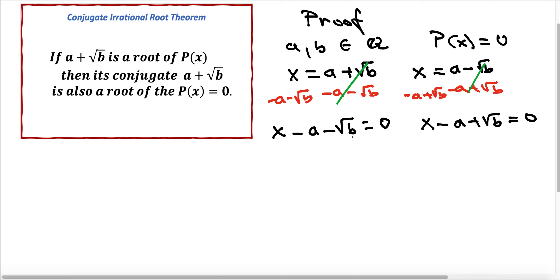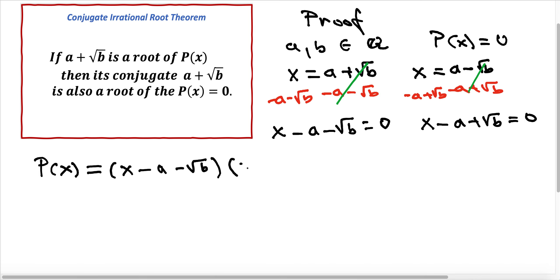Since those two are factors of the polynomial function with rational coefficients, we want to prove this is a polynomial function with rational coefficients. So we can write p of x equals x minus a minus square root of b, times x minus a plus square root of b.